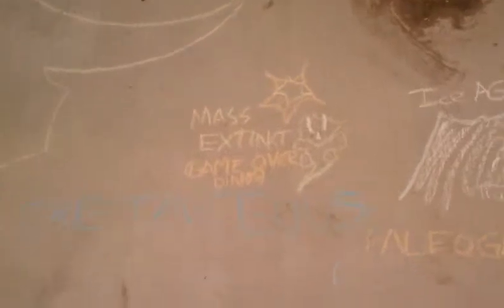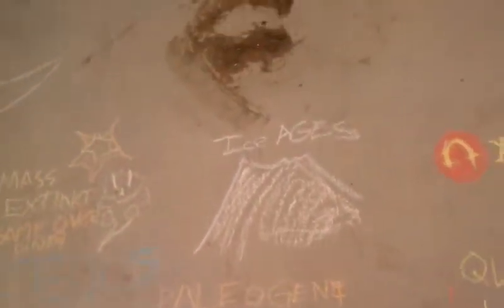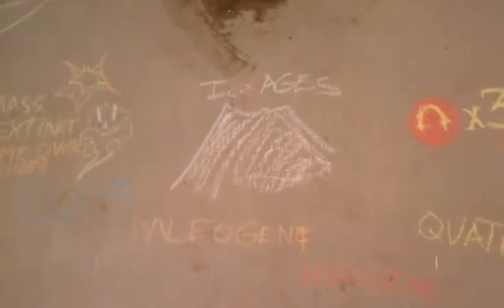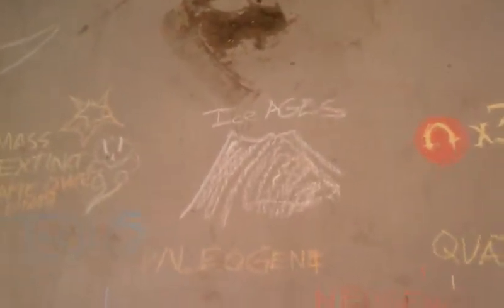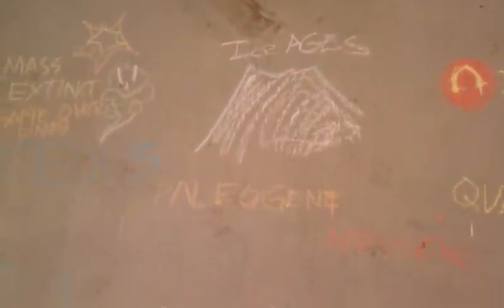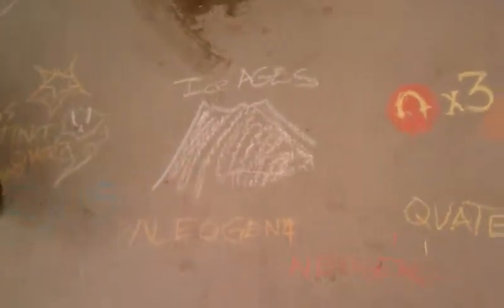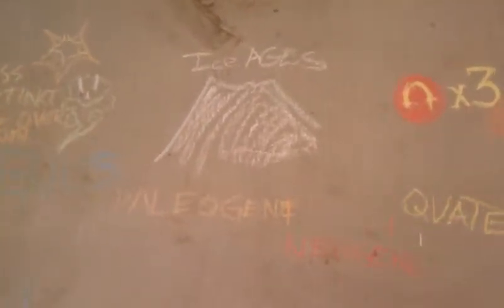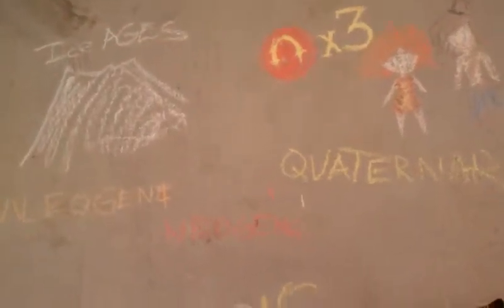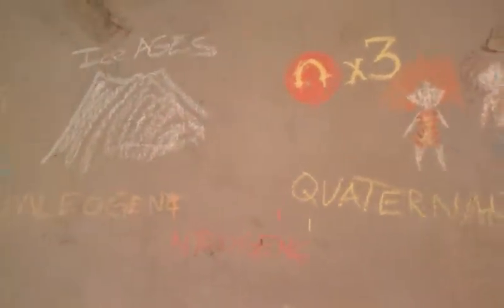That brings us to the end of the Mesozoic Era and into the Cenozoic. Starting in the Paleogene — or rather late Paleogene and into the mid-Neogene — we started to experience a series of ice ages and glacial progression. If the Mesozoic Era was the age of the reptiles, the Cenozoic marked the dawn of the age of the mammals: mastodons, saber-toothed cats, dire wolves — you name it.